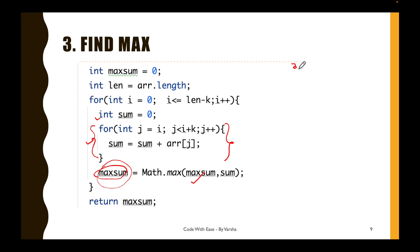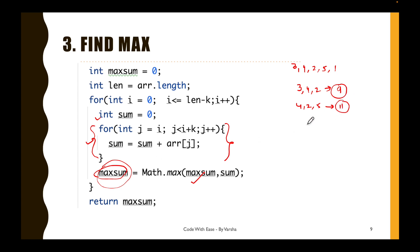Taking this example again: array [3,4,2,5,1]. First subarray [3,4,2] gives sum 9. Second subarray [4,2,5] gives sum 11 — max updates from 9 to 11. Third subarray [2,5,1] gives sum 8 — 11 stays. We return 11. So far so good.